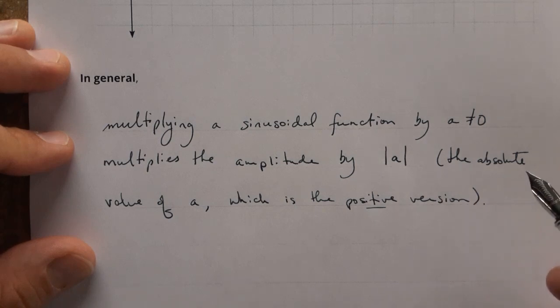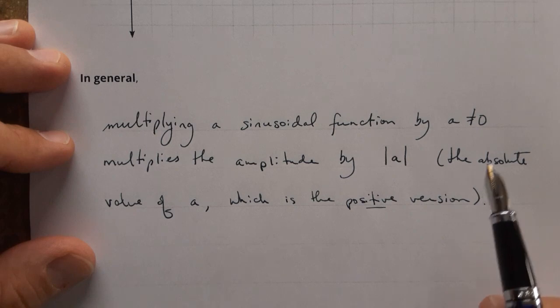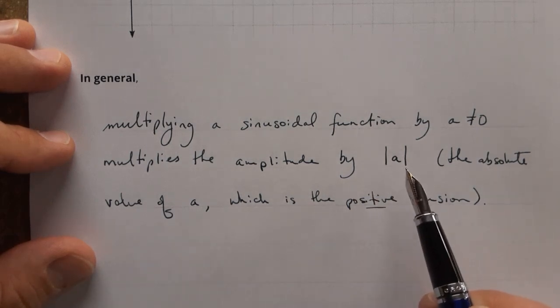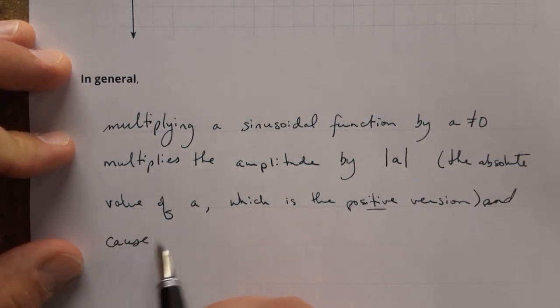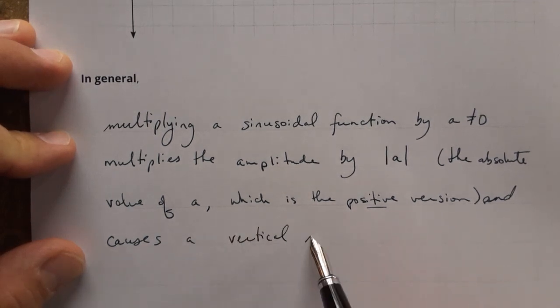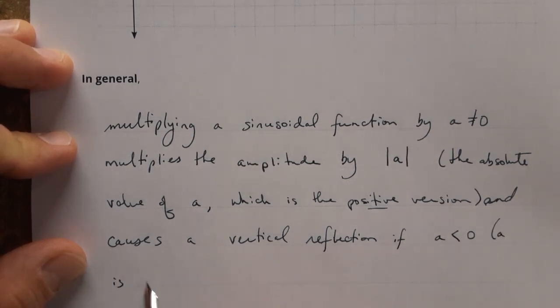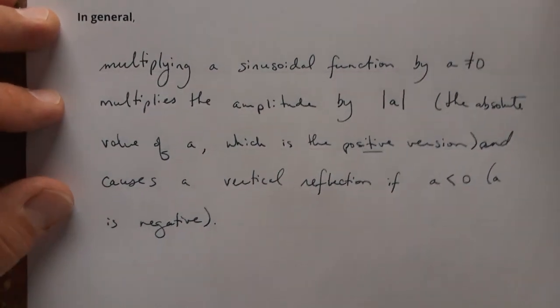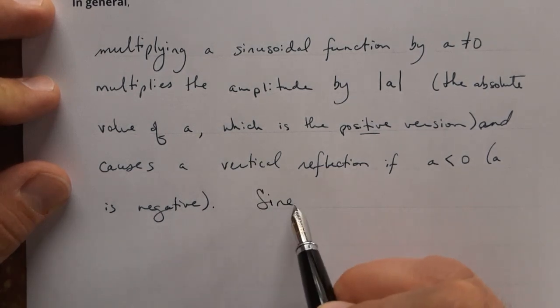So that's one thing that happens and the other thing that happens is sometimes we have a reflection. So let's read our sentence again: multiplying a sinusoidal function by a multiplies the amplitude by the absolute value of a and causes a vertical reflection if a is less than 0. That is, a is negative.